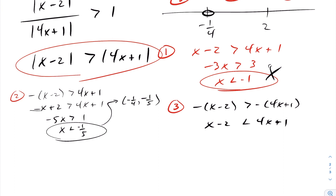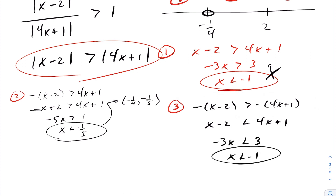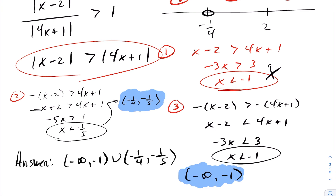For interval three, both absolute values are negative, so we drop them each with a minus sign, then multiply across by minus one and switch the inequality direction. Solving gives x is less than negative one, which is inside interval three. So the solution set for interval three is negative infinity to negative one, open bracket. Combining both solution sets gives the final answer: negative infinity to negative one, union negative one quarter to negative one fifth.